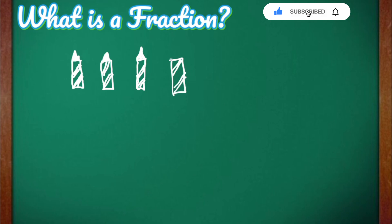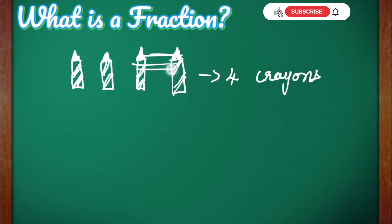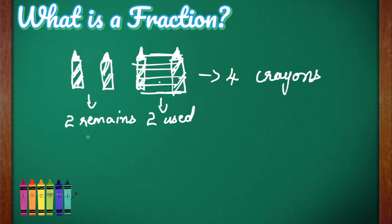Now let us go to the next example. Suppose we have 4 crayons and we have used 2 crayons completely. So 2 crayons have been used and 2 crayons are remaining. We can say that 2 crayons out of 4 have been used.